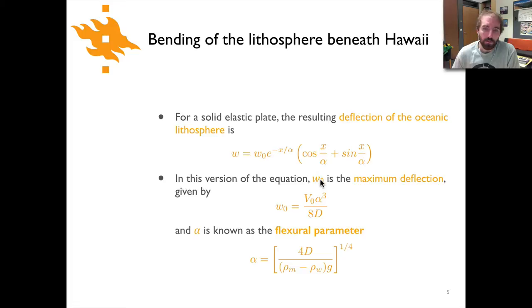So w naught what is that? Well it's simply the maximum deflection and that's something that can be calculated by the magnitude of the shear force v naught times alpha cubed divided by 8d where d is the flexural rigidity that again is something that is a material property for the lithospheric plate and alpha is something that's called the flexural parameter you can see here that it's equal to 4 times d again there's that flexural rigidity times the difference in density between the mantle and water times g and that is taken to the one-fourth power or taking the fourth root of that term. So that's how we get our alpha and so with alpha and w naught then we can plug things in here and we have a relatively simple equation for calculating the deflection.